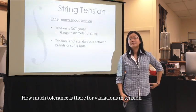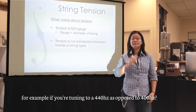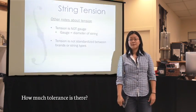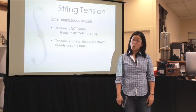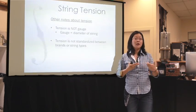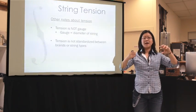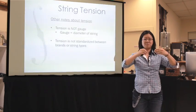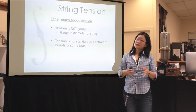Question: How much tolerance is there for variations in tension — for example, when tuning to 440 versus 400, when does the string snap? It depends on the core type. Steel might take more tension upfront but it's not very elastic, so it'll take a lot of pressure and then just snap. A really stretchy synthetic elastic core gives you more stretch, but it may lose its function because it becomes so stretched out that the core loses its integrity.